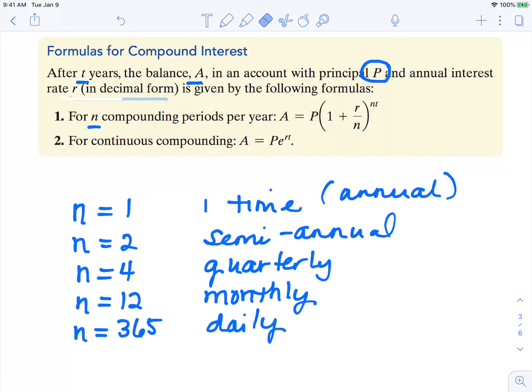Now we do have one other formula. Formula 2 is when we compound continuously. We nicknamed that the PERT equation. If you don't have compounding continuously, then you're going to choose the top formula and one of these N values.